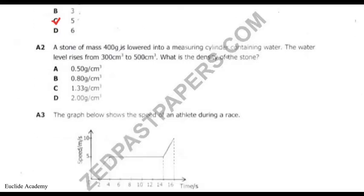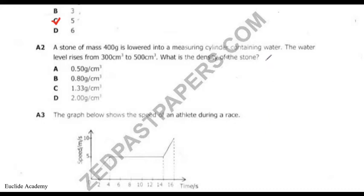Question two: a stone of mass 400 grams is lowered onto a measuring cylinder containing water. The water level rises from 300 to 500 centimetres cubed. What is the density of the stone? We know that density is equal to mass over volume.